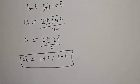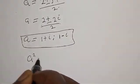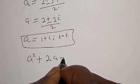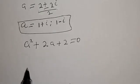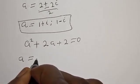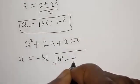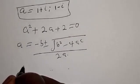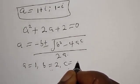Also, for the second case, the equation is a squared plus 2a plus 2 is equal to 0. We can also solve using the quadratic general formula: minus b plus or minus square root of b squared minus 4ac, over 2a. Here, a is equal to 1, b is equal to 2, and c is equal to 2.